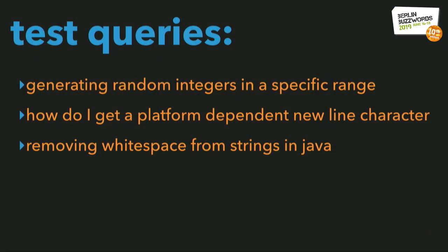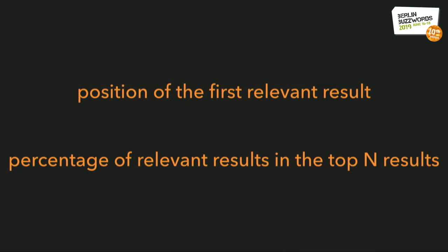As a test, the authors scraped almost 10,000 Java projects with at least 20 stars on GitHub—none included in the training corpus—and encoded the methods of those projects. They then created a benchmark of queries from the top 50 voted Java programming questions on Stack Overflow: queries such as 'generating random integers in a specific range,' 'how do I get a platform-dependent newline character,' and 'removing white space from strings.' Looking at ordered search results compared to those produced by Lucene-based systems and CodeHow (the prior state-of-the-art), DeepCS vastly outperformed its competitors both in position of the first relevant result and in the percentage of relevant results in the top-N.